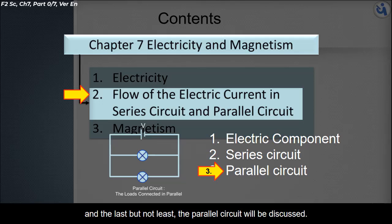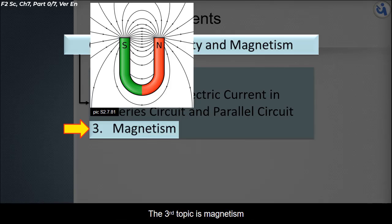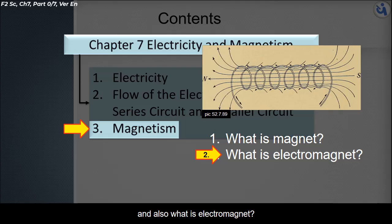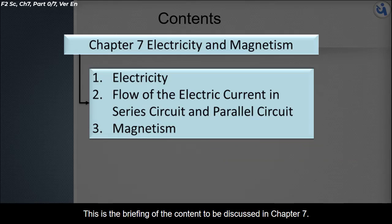The third topic is magnetism, in which we will discuss what is a magnet and also what is an electromagnet. This is the briefing of the content to be discussed in Chapter 7. Let's proceed to topic 1.